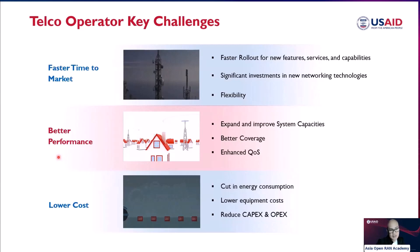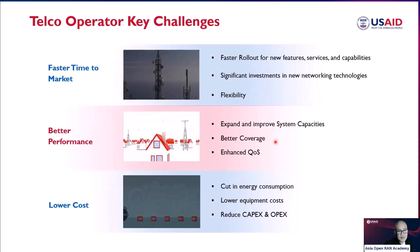Next is better performance. During the pandemic, when people started to stay at home and work from home, there was a lot of capacity demand happening. Operators needed to expand and improve system capacities. With people staying indoors, we needed to improve coverage as well, but improving coverage and enhancing capacity has an impact on quality — that's the coverage-capacity-quality triangle.